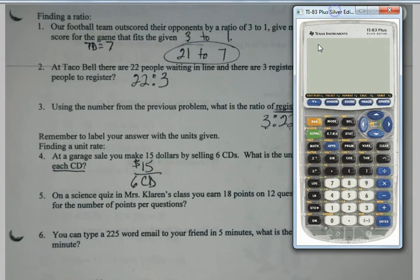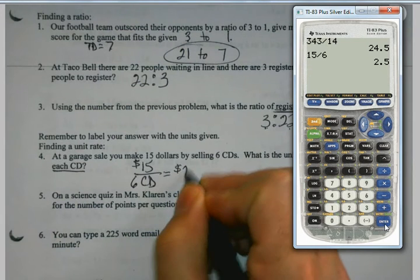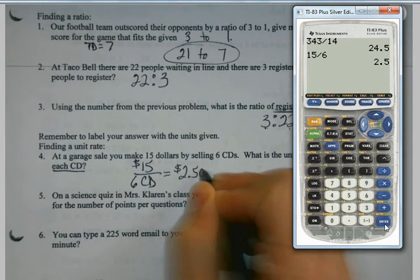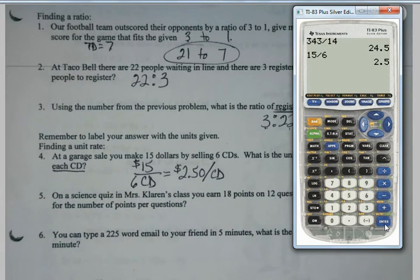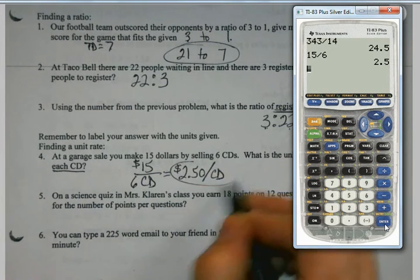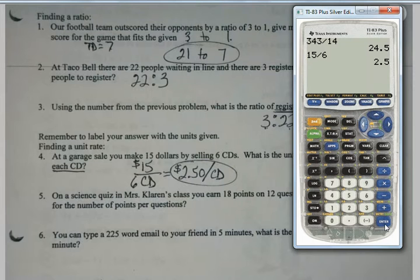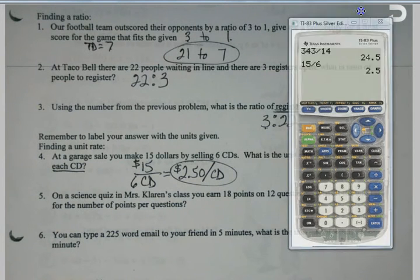If I want to find out how much did I make on each one, I just do the dividing. I make $2.50 per CD. I've got to use the labels to understand what it is I'm saying. Had $15, sold six CDs, I made $2.50 on each CD, not something else. That's all I'm doing. Making my ratio or fraction and then just simplifying it.